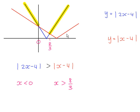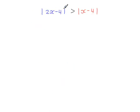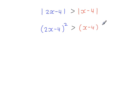Instead of sketching graphs and working out the points of intersection between the two modulus functions and then solving inequalities, which is quite a long process, we can use an algebraic method without sketching graphs and arrive at the same solutions. The modulus means nothing can be negative, and the same is true if you square something. So we start by squaring both sides, removing the modulus and replacing each side with its square.